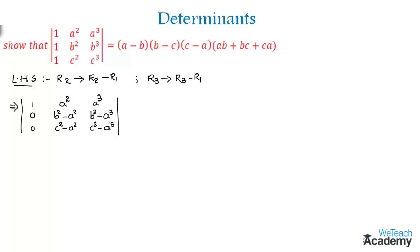We obtained these elements by performing the operations on the second and third rows. Now, observe that B squared minus A squared is in the form of a difference of squares, and B cubed minus A cubed is in the form of a difference of cubes. Using these formulas, we can take (B minus A) as the common factor from the second row and (C minus A) as the common factor from the third row.